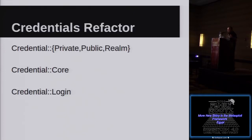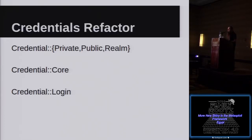We've separated into two major categories: a credential core, which is the combination of a public, a private, and a realm — possibly some of those missing depending on the situation. And a login, which ties that to an actual service. So you can have a core username and password set not associated with anything, and you can also tie those things to a service. All of this is in ActiveRecord, so it's super easy to query.